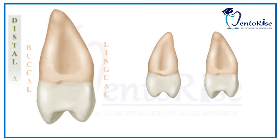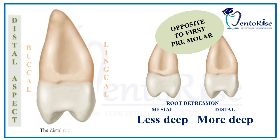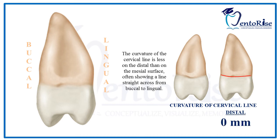Coming to the distal aspect: in the anatomy of permanent maxillary first premolar, the distal root depression is less deep than that of the mesial depression. However, this is completely opposite in a permanent maxillary second premolar, wherein the distal root depression is deeper than that of the mesial depression. Additionally, the curvature of the cervical line on the distal aspect of permanent maxillary second premolar is less than that of the mesial aspect of this tooth. Please observe the figure carefully.